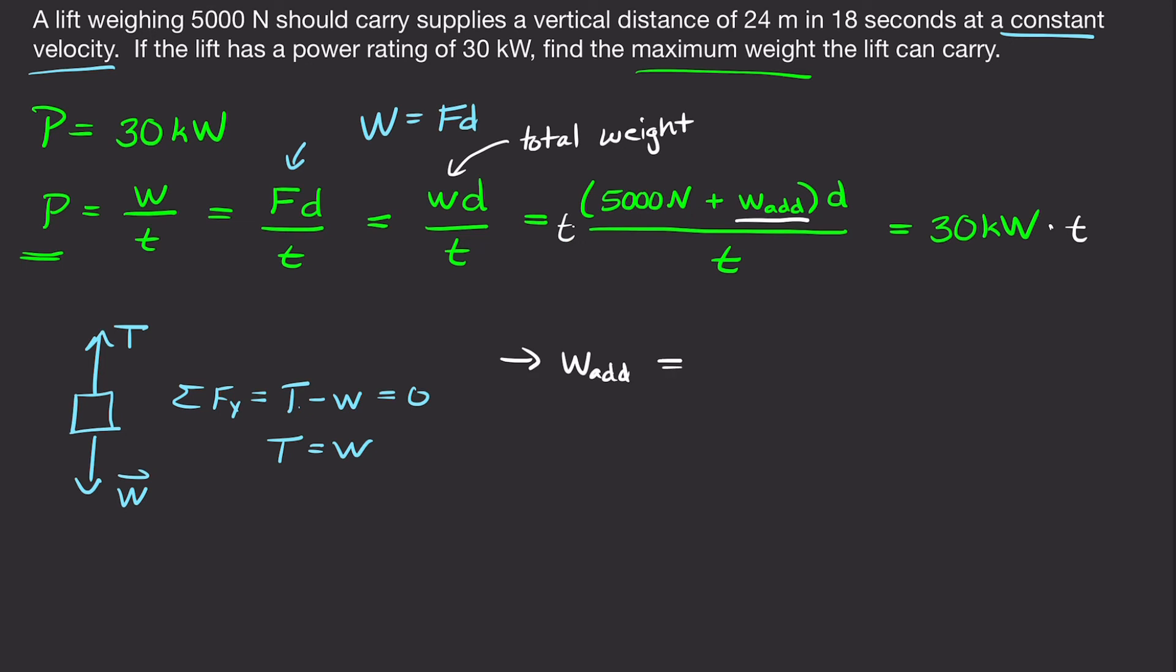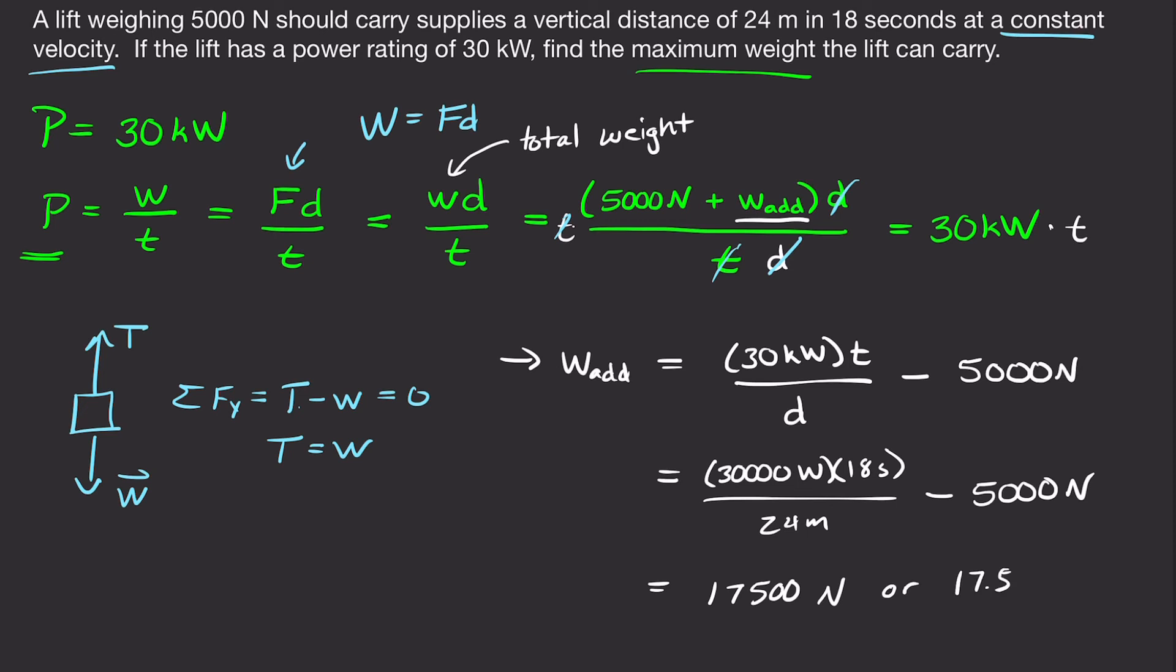We're going to multiply by time on both sides. So, we're going to have 30 kilowatts multiplied by our time. Then we're going to divide by the distance to get it to the other side. And then we're going to be left with this 5,000 Newtons that we need to subtract to move it over. So, this is our final expression. We'll plug all that in. This is going to be 30,000 watts times 18 seconds over a distance of 24 meters. And then we have to subtract off the weight of the lift itself. And when we do that, we get 17,500 Newtons or 17.5 kilonewtons.